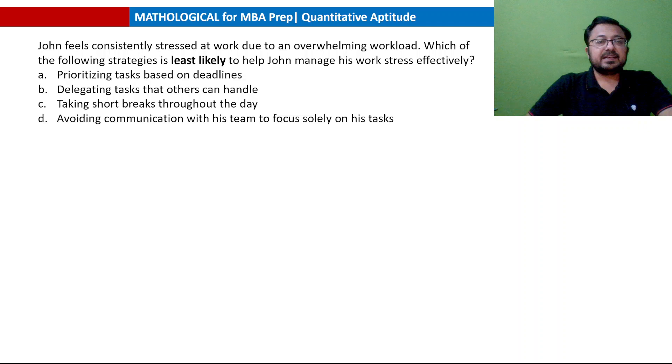John feels consistently stressed at work due to an overwhelming workload. Which of the following strategies is least likely to help John manage his work stress effectively? Options are: prioritizing tasks based on deadlines, delegating tasks that others can handle, taking short breaks throughout the day - these are all fine. Option D: avoiding communication with his team to focus only on his tasks. This is the problematic part. Option D should be the answer - least likely to help. He is avoiding communication with his teammates, which will hinder collaboration and will not help manage work stress.